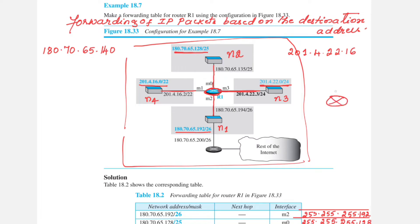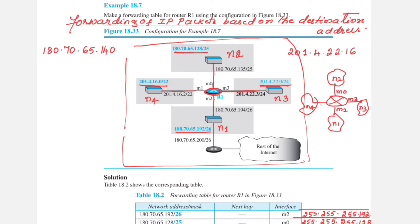The router is here and you have four networks connected to it. N1 is connected to interface M2, N2 is connected to interface M0, N3 is connected to interface M3, and network N4 is connected to interface M1. So M0, M1, M2, and M3 are the four interfaces.